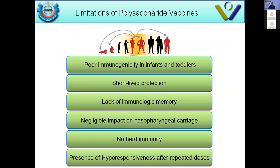The limitations of polysaccharide vaccines include poor immunogenicity in infants and toddlers, short-lived protection, lack of immunological T-cell memory, negligible impact on nasopharyngeal carriage, and no herd immunity. Polysaccharide vaccines are not associated with good herd immunity. There is also the hyporesponsiveness effect after repeated doses.